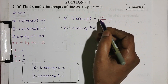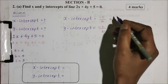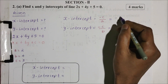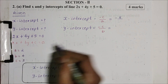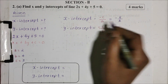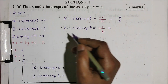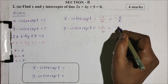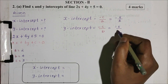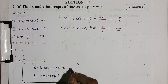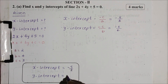x-intercept equals minus c divided by a, that is minus 5 divided by 2. y-intercept equals minus c divided by b, that is minus 5 divided by 4. That is the simple answer — 4 marks. It is very simple.